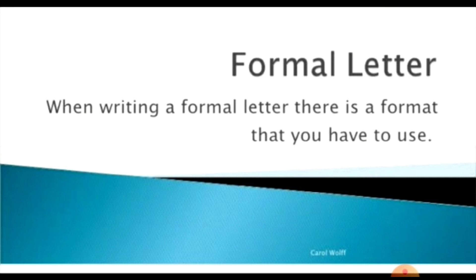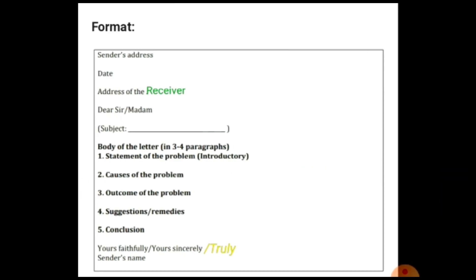When writing a formal letter, there is a format you have to use. First is the sender address — the address and contact details of the sender are written here. After that, the date is written below the sender address, after leaving one blank line.